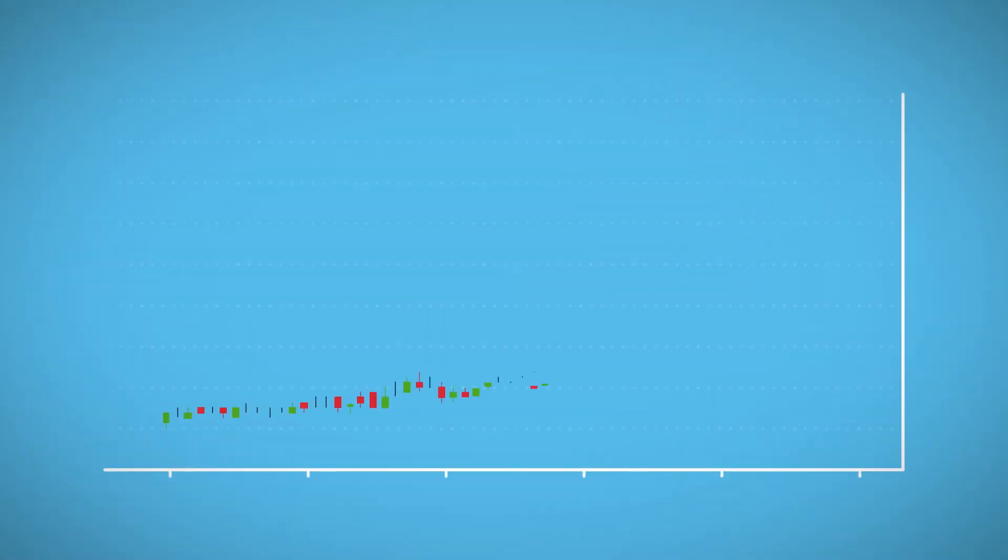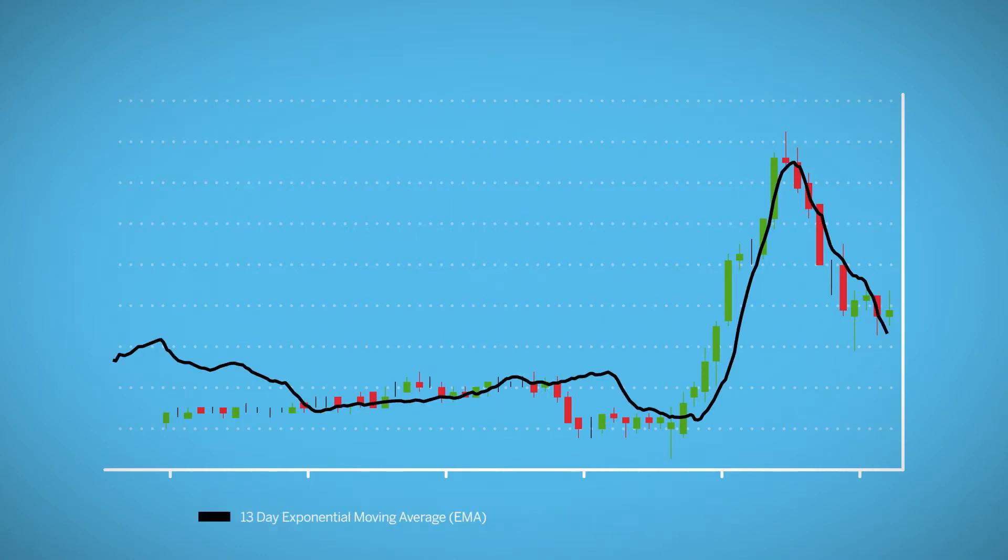Traders can also visualize short-term and long-term support and resistance on a chart by adding moving average lines of different time periods. For example, a trader could use the 13 EMA as a short-term indicator and the 200 EMA as a longer-term indicator on the same chart.